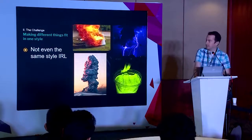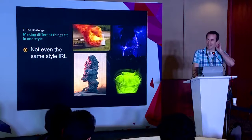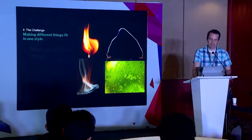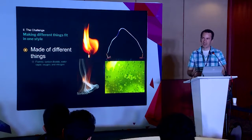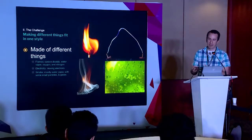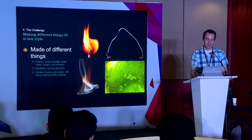This is especially challenging because in real life they don't look the same at all — these look like different games, even though this is all live-action footage. That's because they're made of different things. Fire is composed of carbon dioxide, water vapor, oxygen, and nitrogen. Electricity is simply electrons moving very fast and discharging energy. Smoke is mostly water vapor combined with small particles, so it has some overlap with fire. But they are subtly different enough to require a different technique. And slime is a crystalline structure flooded with water — completely different from fire.